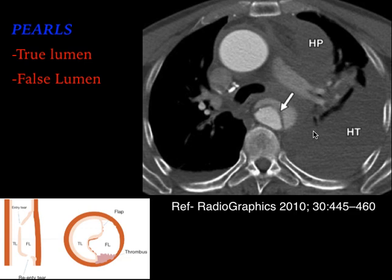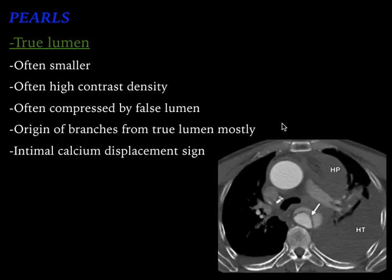Coming to the most important part of the video: differentiating the true from the false lumen. This is an axial CECT section. You can see there is a flap — the intimal flap — which is displaced. So which one is the true lumen and which one is the false lumen? Let us see how to differentiate them.